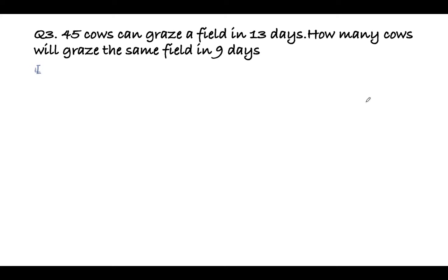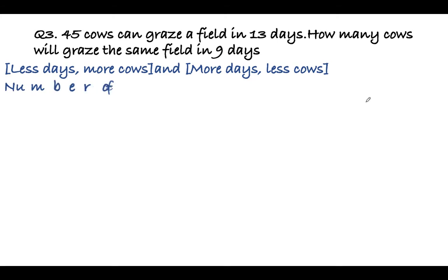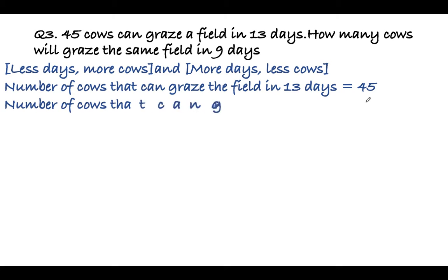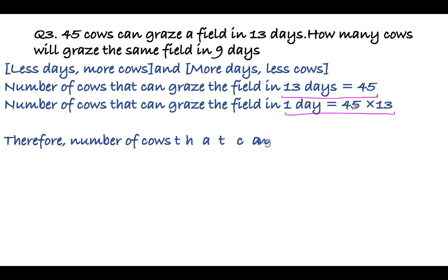So it is inverse variation. We know that in 13 days, 45 cows can graze the field. So in one day, 45 × 13 cows can graze the field. And if we are talking about nine days, then this will be the number of cows.